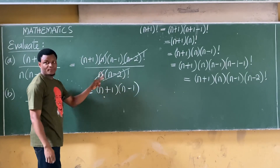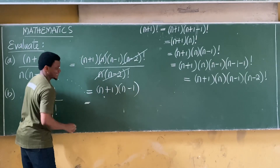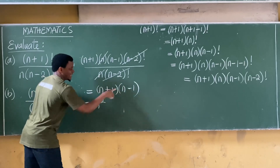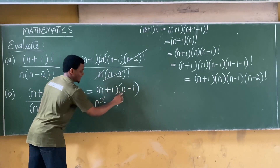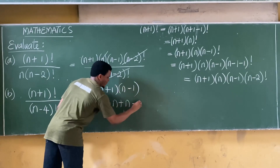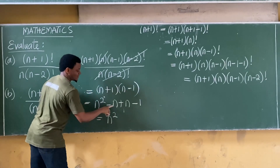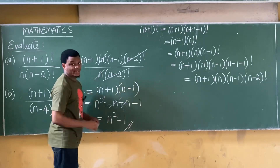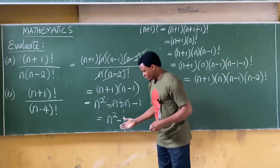The denominator is gone, so we simply expand n+1 into n-1. Expanding: n times n is n², n times -1 is -n, +1 times n is +n, and +1 times -1 is -1. So we have n² - n + n - 1. The -n and +n cancel out, leaving the final answer as n² - 1.